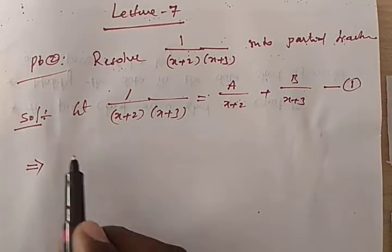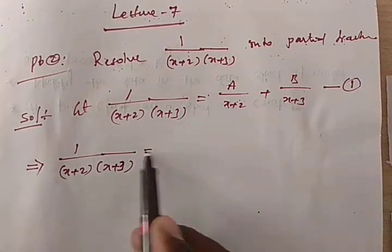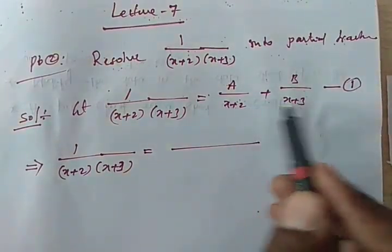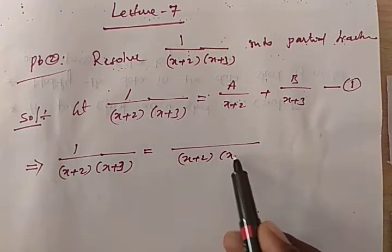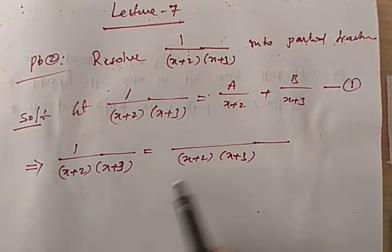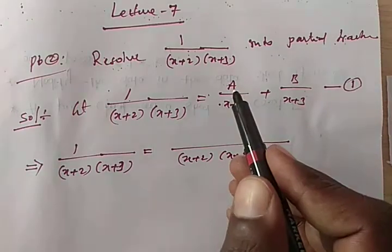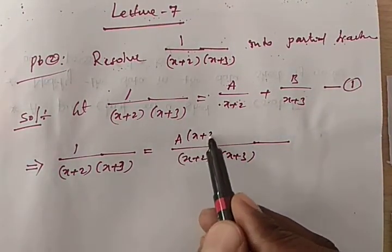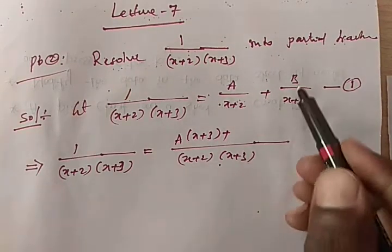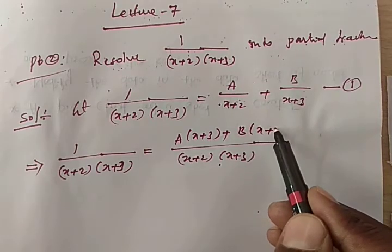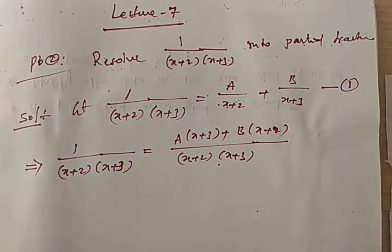This implies that the left side equals the right side. What is the LCM of these two denominators? The right side denominator is (x+2)(x+3). We multiply through by the LCM: x+2 gets cancelled, leaving A(x+3); then x+3 gets cancelled, leaving B(x+2). So the numerator becomes A(x+3) + B(x+2).